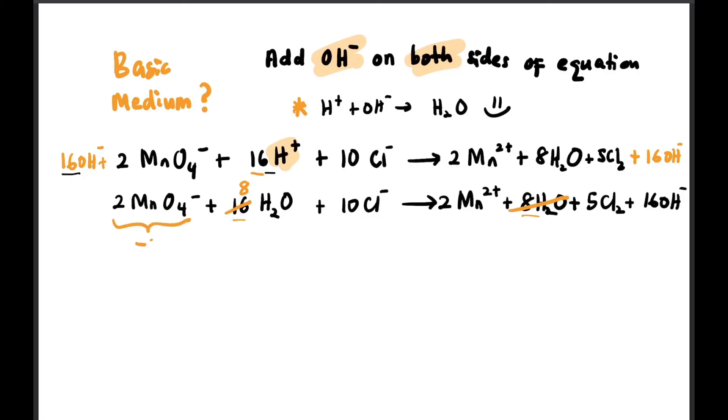So -2 for MnO₄⁻ there, and then 0 for water, and then -10 for Cl⁻. +4 for Mn²⁺ there, there are 2, so 5Cl₂ is 0. 16 OH⁻ is -16. So on the left is -12, on the right is also -12. So it's balanced in basic medium.